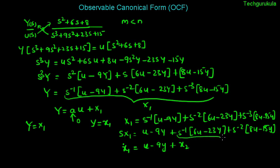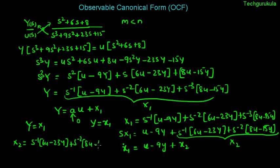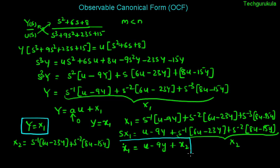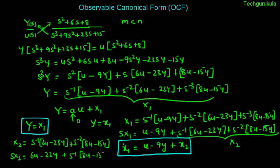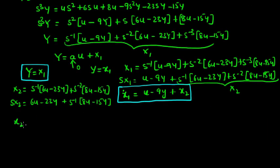In the s domain, x2 is given by s-inverse times (6u minus 23y) plus s to the power minus 2 times (8u minus 15y). To highlight the important equations so far: y equals x1, x1-dot equals u minus 9y plus x2, and from the next step s times x2 equals (6u minus 23y) plus s-inverse times (8u minus 15y).